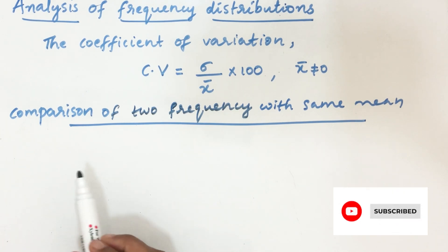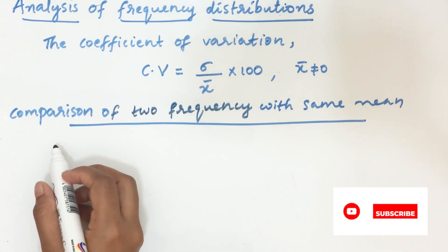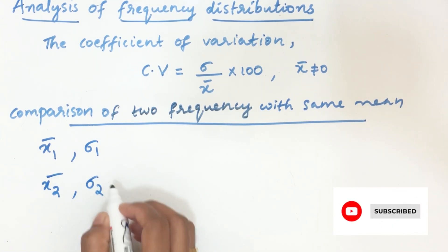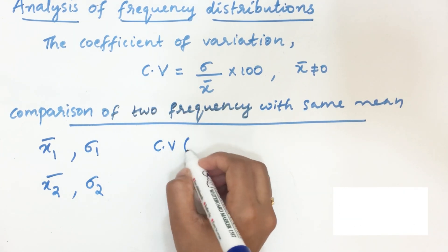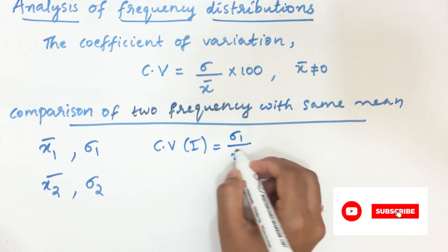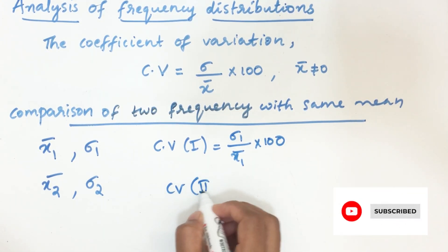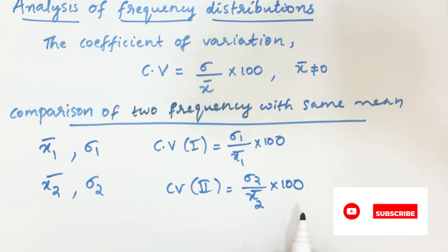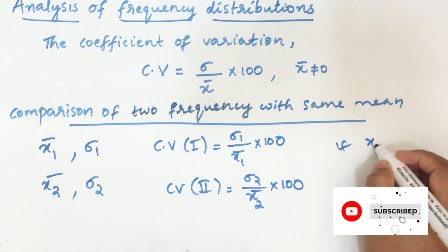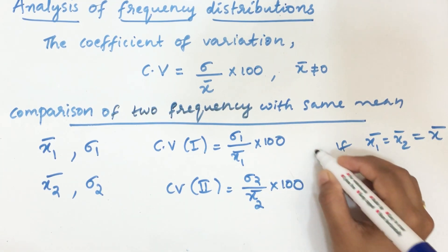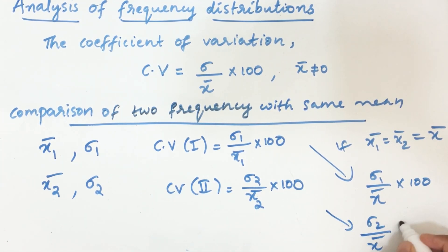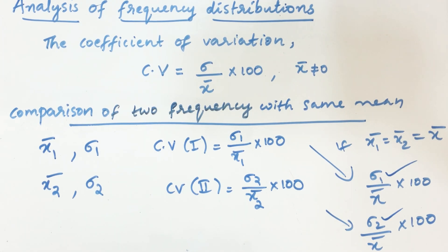Suppose we have two distributions: the first with mean x̄₁ and standard deviation σ₁, and the second with mean x̄₂ and standard deviation σ₂. CV for the first is σ₁/x̄₁ × 100 and for the second is σ₂/x̄₂ × 100. If x̄₁ = x̄₂ = x̄, then CV₁ = σ₁/x̄ × 100 and CV₂ = σ₂/x̄ × 100. So we can compare directly by looking at σ₁ and σ₂.